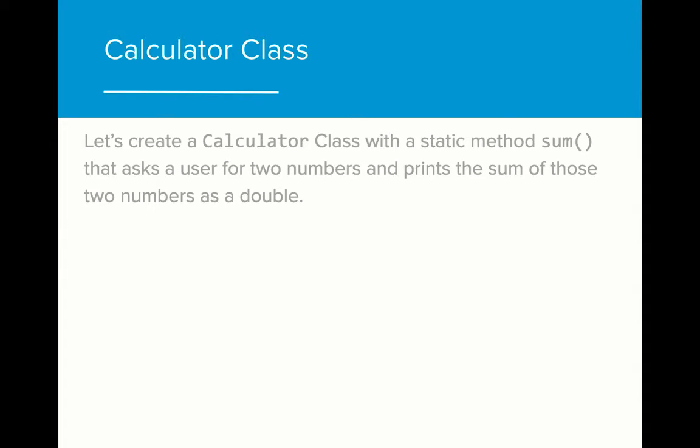As a quick warmup, let's create a calculator class with the static method sum that asks a user for two numbers and prints the sum of those numbers as a double. Can you figure out the steps you need to take in order to complete this method?